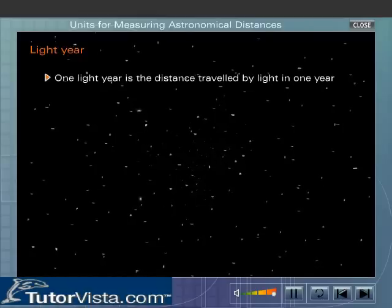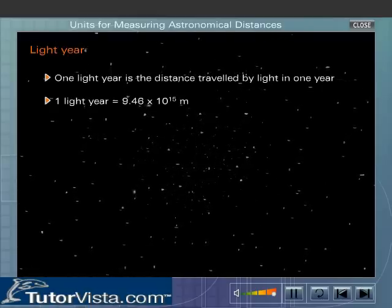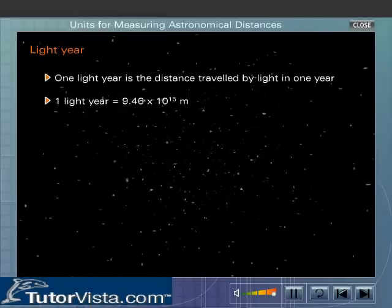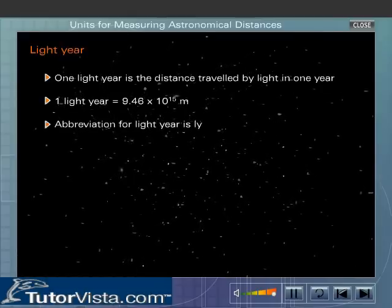Lightyear. One lightyear is the distance travelled by light in one year. One lightyear is equal to 9.46 into 10 to the power 15 metres. Abbreviation for lightyear is L.Y.